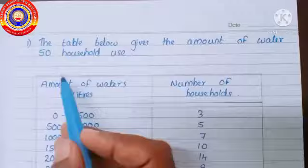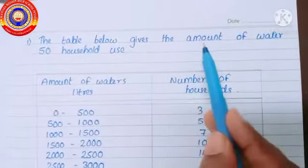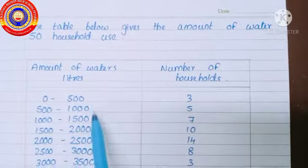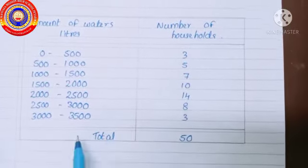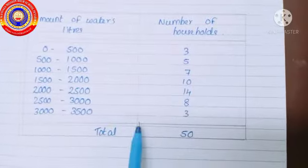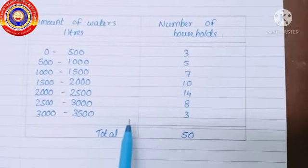The table below gives the amount of water 50 households use. This is the amount of water in liters and number of households, total 50. So let's draw a histogram using this frequency table.